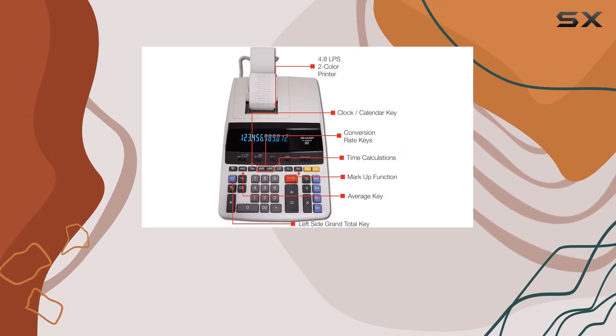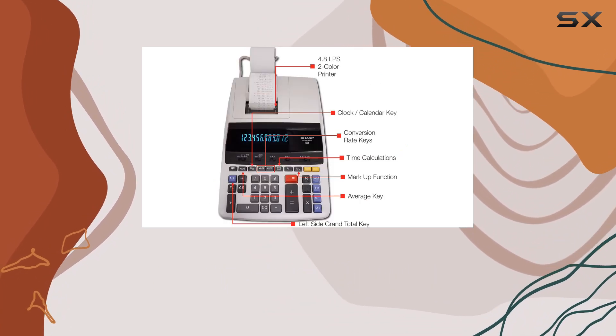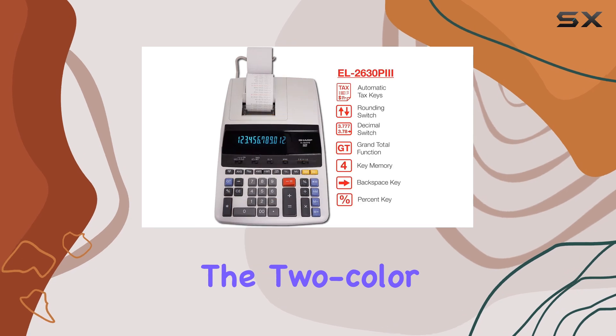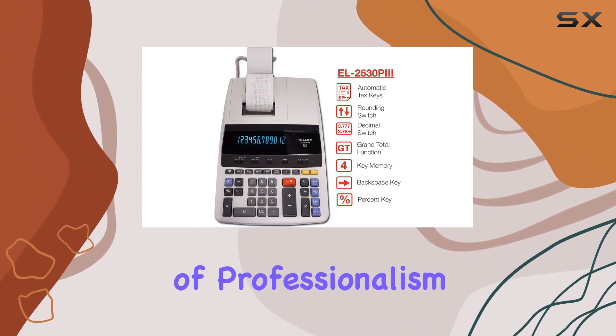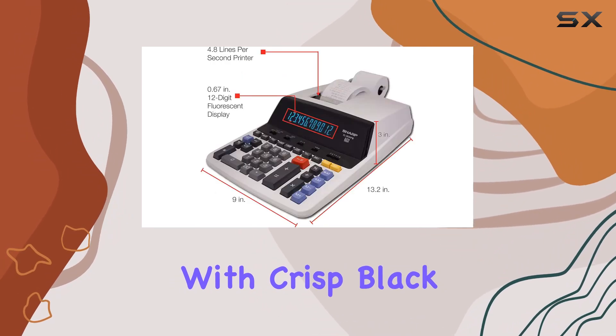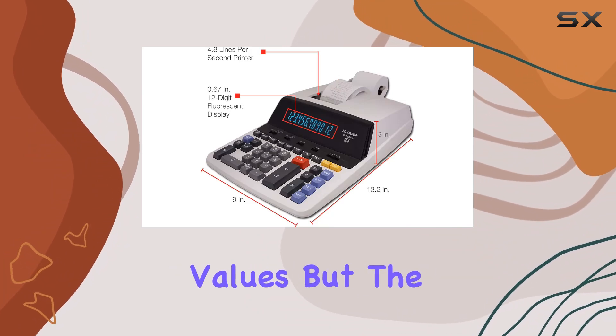This means you can breeze through your tasks without any delays, boosting productivity in the process. The two-color ribbon printer adds a touch of professionalism to your printouts, with crisp black and red ink highlighting important figures or negative values.